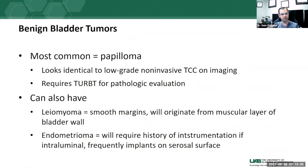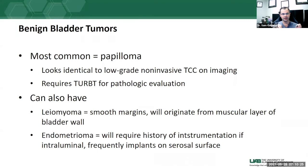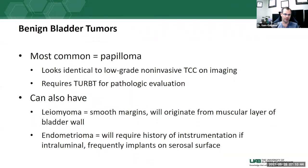Not every bladder tumor is malignant. The most common benign bladder tumor is the papilloma. On imaging, papillomas look identical to low-grade non-invasive transitional cell carcinoma — small polypoid masses protruding into the bladder lumen. If we see them on CT or other scans, we raise concern for bladder cancer. Ultimately these patients go to cystoscopy with resection, and the pathologist determines whether it's a malignant bladder tumor or a benign papilloma.